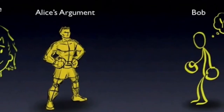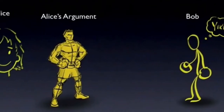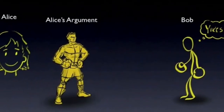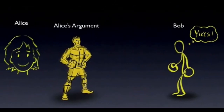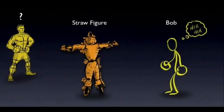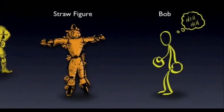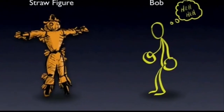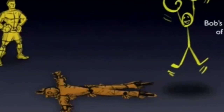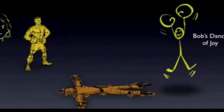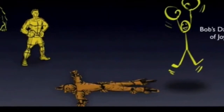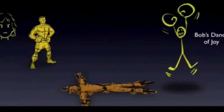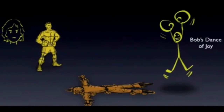Alice offers an argument to Bob — she wants to convince him of something. Let's say Alice's argument is really strong, like a strong boxer. Bob is not sure he can handle this argument, so instead of trying to refute Alice's actual argument, Bob decides to engage a 'straw man' — a weaker, distorted version of Alice's original argument. Because it's weaker, Bob is easily able to refute the straw man argument. The Straw Man fallacy is complete when Bob claims he has completely refuted Alice's original argument, but in truth he has only refuted a distorted misrepresentation of it.